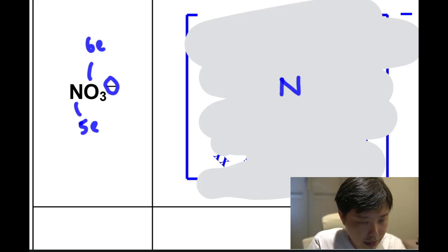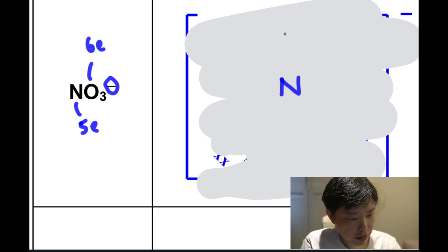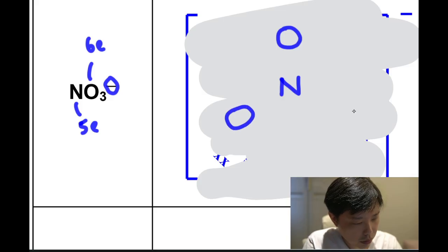All right, so let's just put in the atoms. Okay, so we'll start off with the central atom N, least electronegative, plus it will form the most bonds. Okay, so we'll have oxygen all around it, one, two, three, all around it.